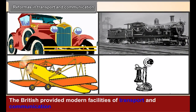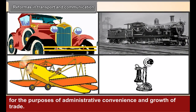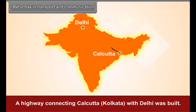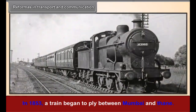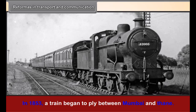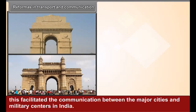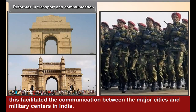Reforms in Transport and Communication. The British provided modern facilities of transport and communication for the purposes of administrative convenience and growth of trade. A highway connecting Calcutta-Kolkata with Delhi was built. In 1853, a train began to ply between Mumbai and Thane. In the same year, the British started a telegraph system in India. This facilitated the communication between the major cities and military centers in India.